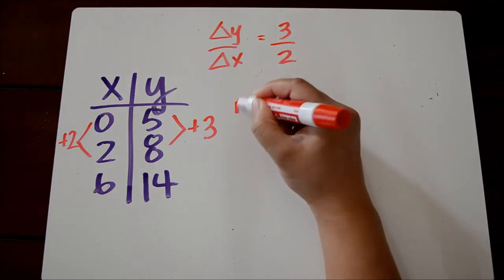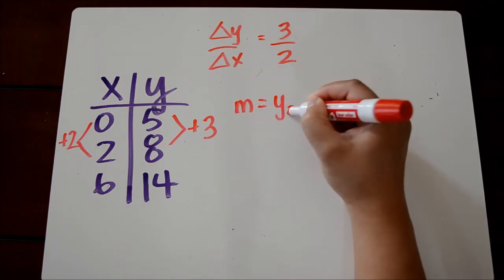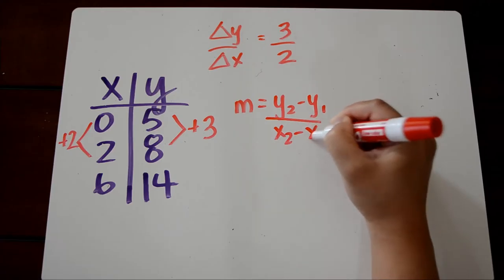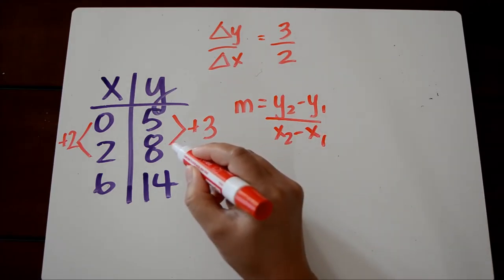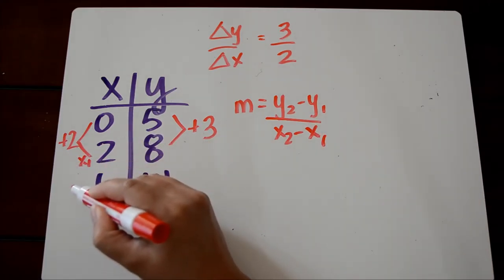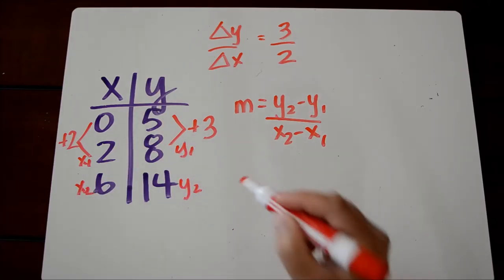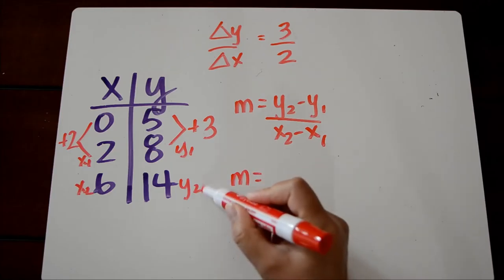Now let's use our slope formula. M equals y2 minus y1 over x2 minus x1. We're going to use the last two points on this table. So I'm just going to label those x1, x2, here's y1, y2, and we just substitute these values into the formula.